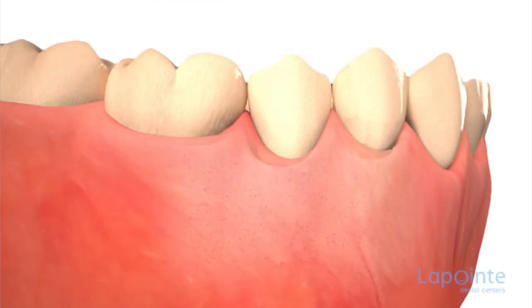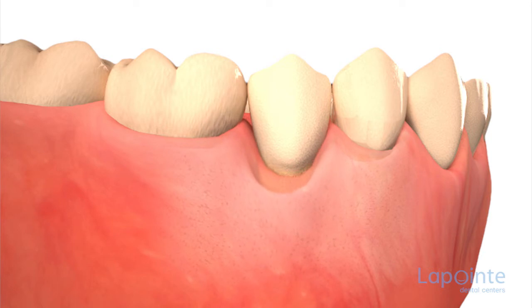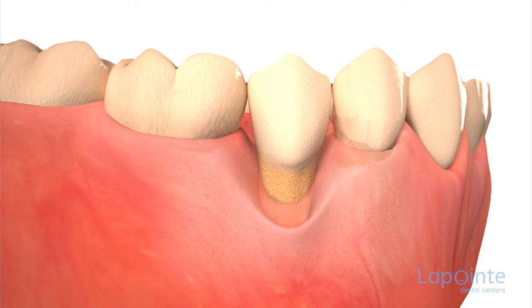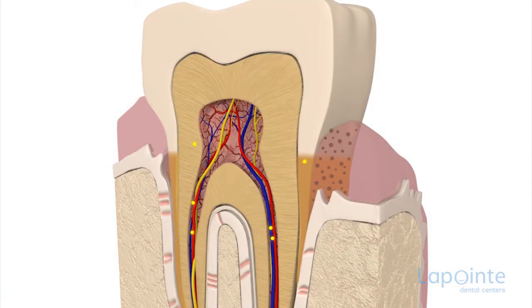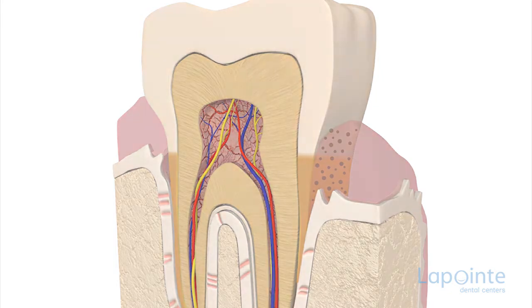Recession of the gum is a periodontal complaint characterized by the loss of gum tissue in the immediate environment of the tooth, resulting in exposure of the root. These exposed areas can be acutely sensitive and can create an unaesthetic outline, or even be the expression of a more acute attack.